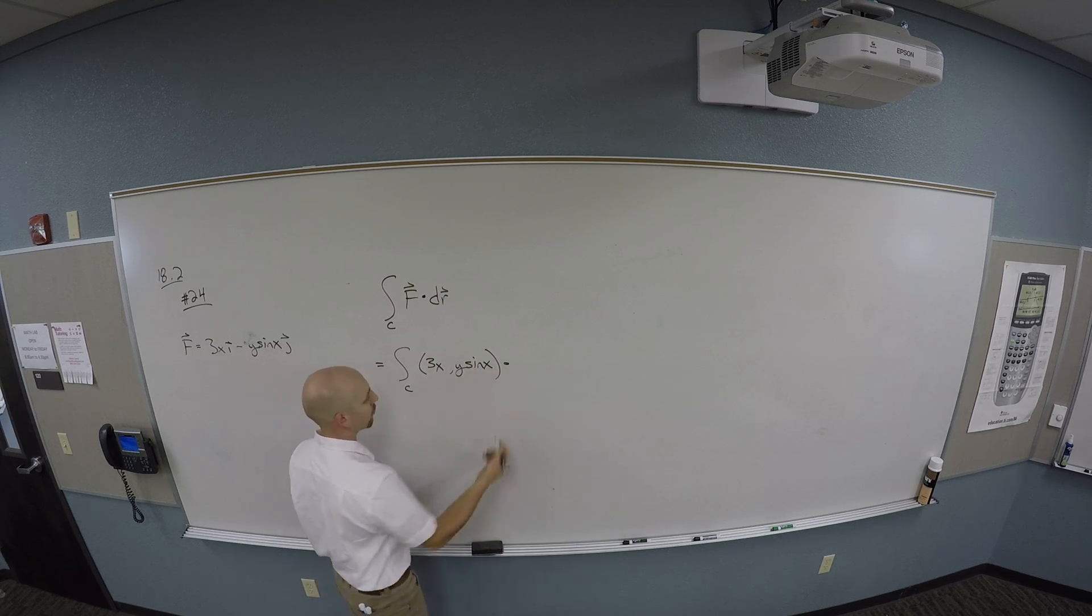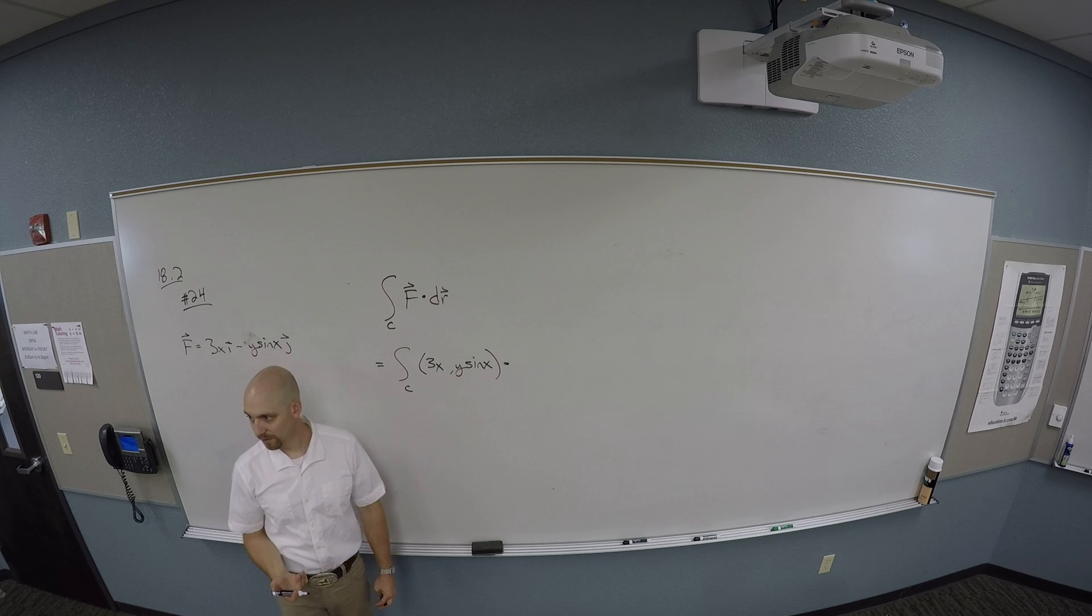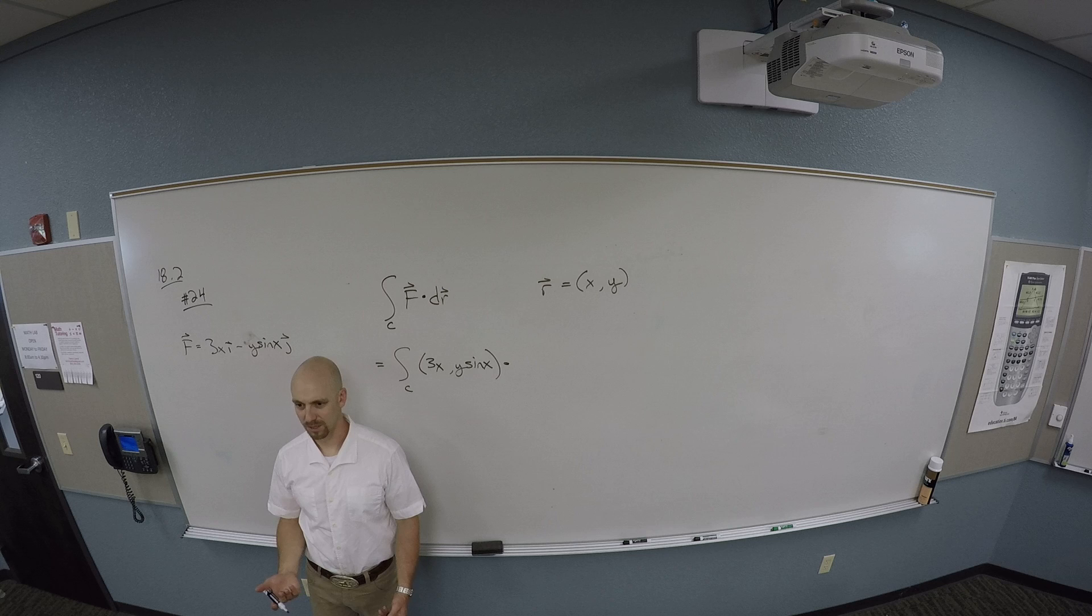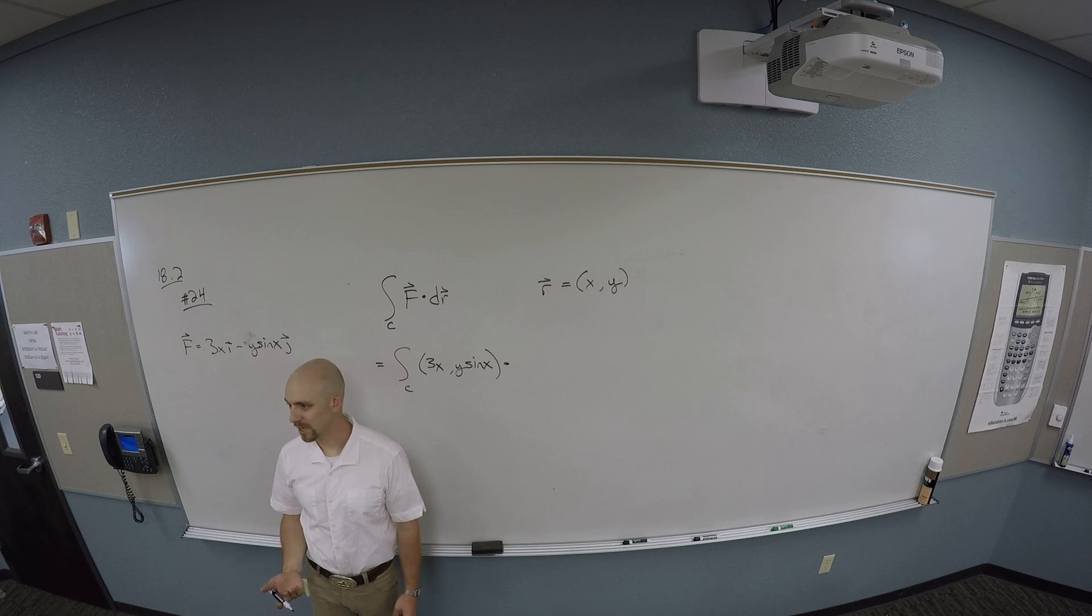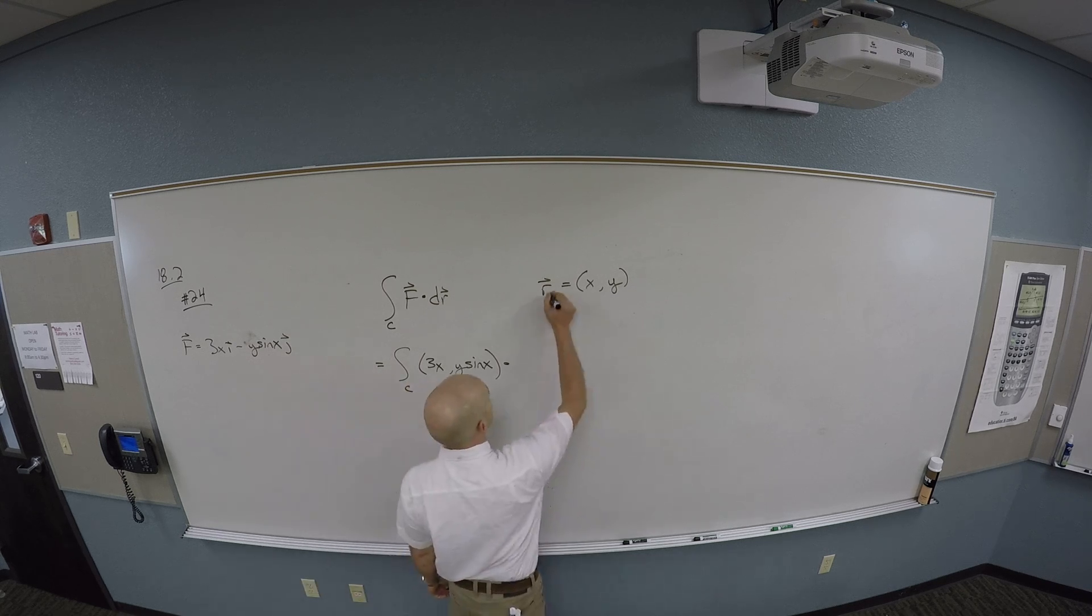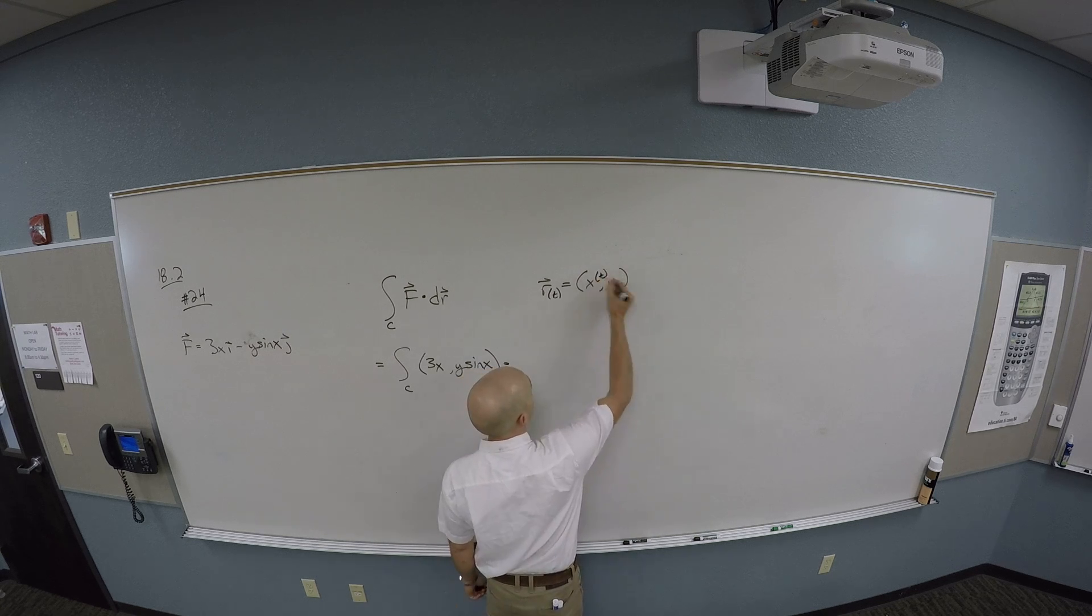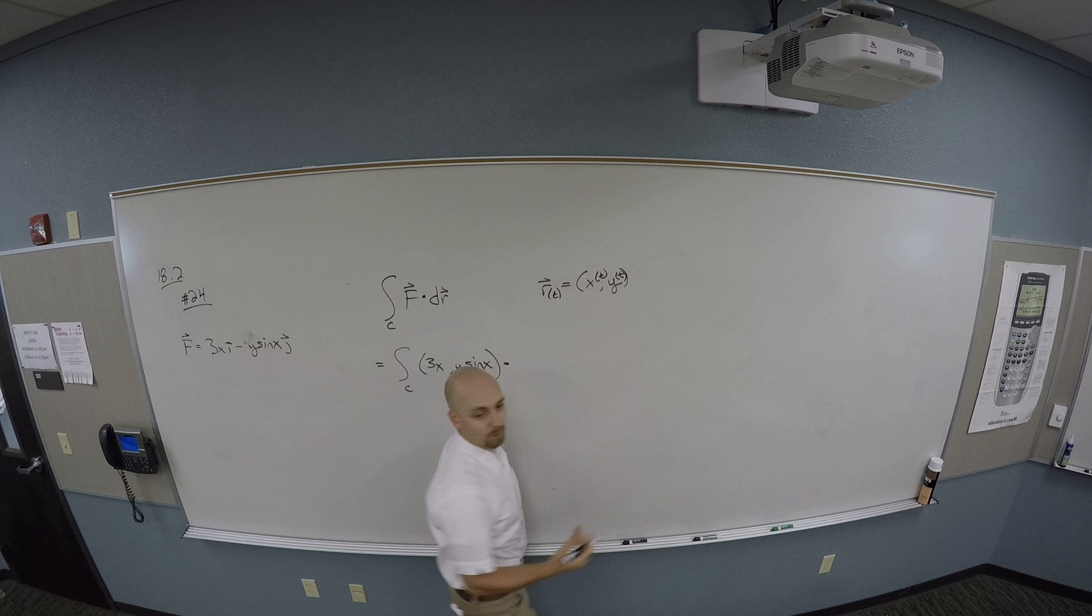And I want to dot this with dr. Okay, so let me think about r. What if r was x comma y? Am I playing a little fast and loose with notation here? What should I add to this to firm up my notation?